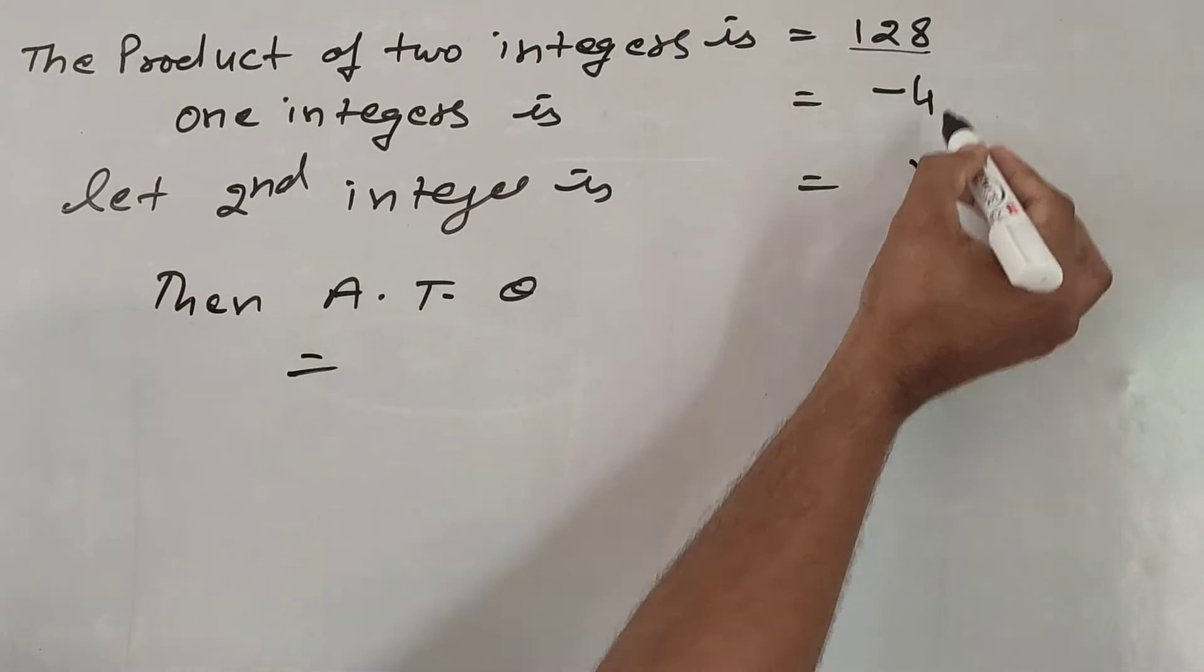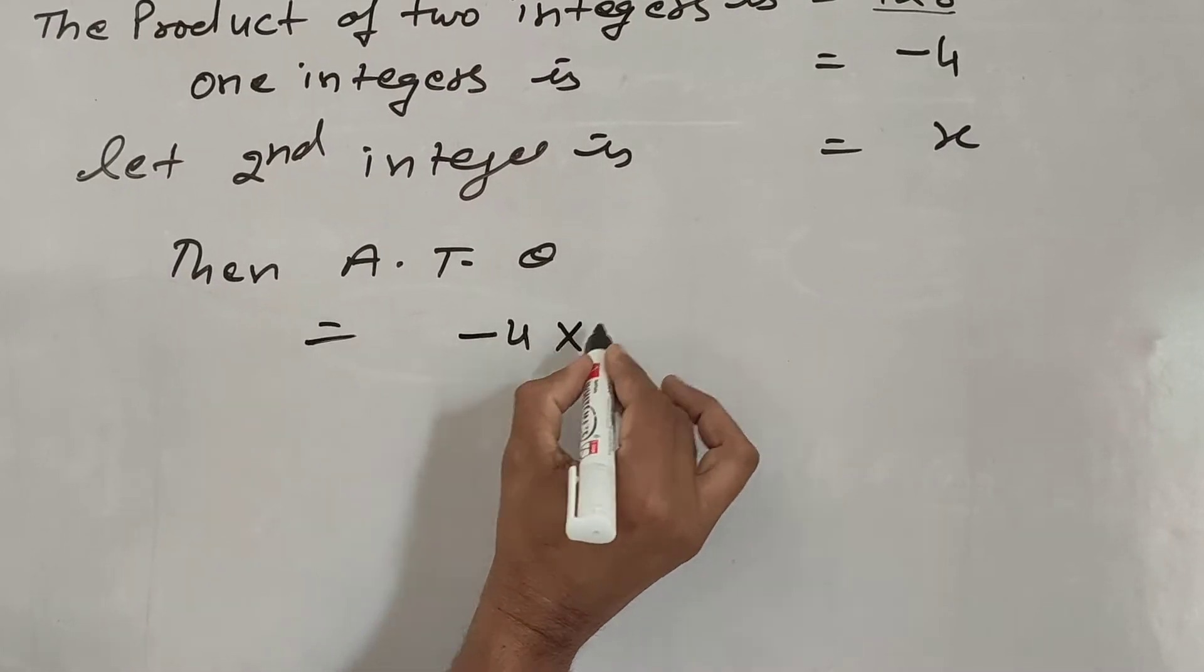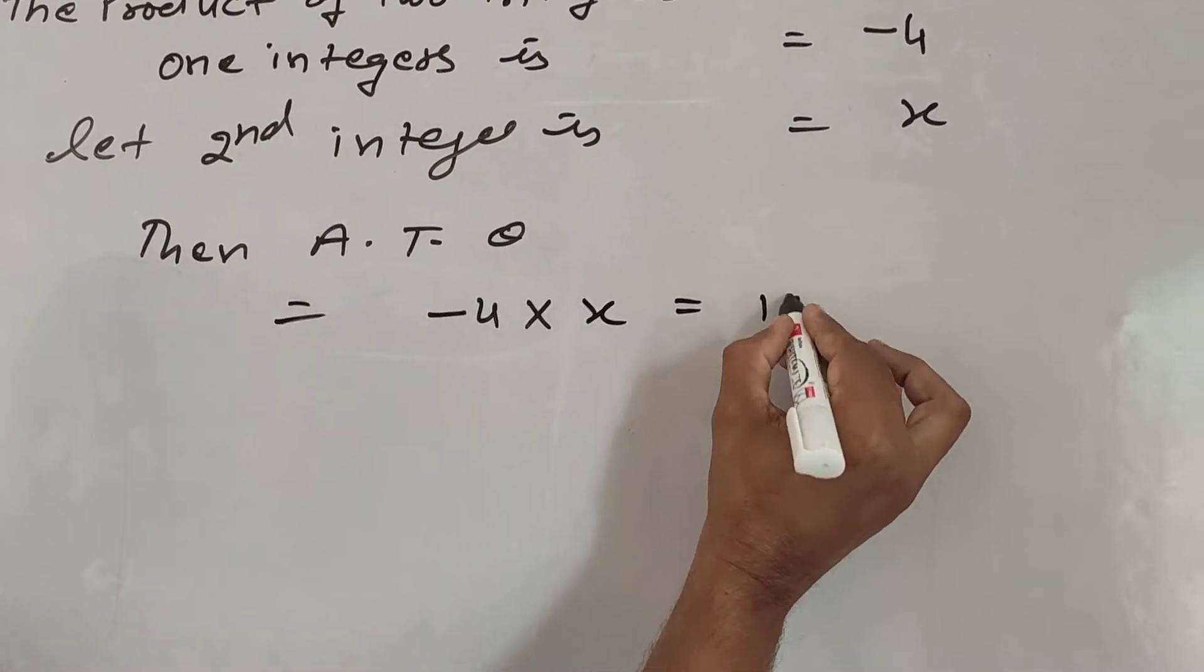their product is 128. So, minus 4 times x equals 128.